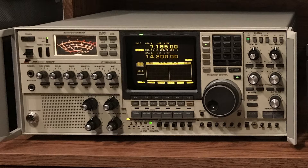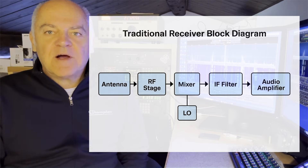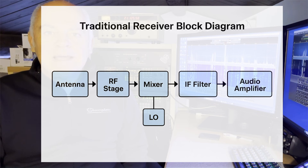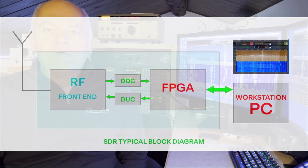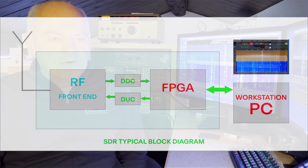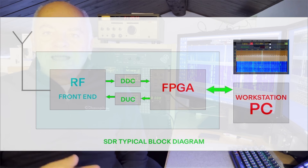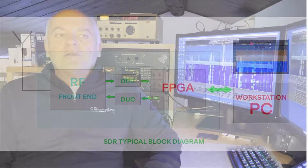A traditional radio is built from analog components, each of them performing a fixed function. In an SDR, most of these operations are done by software. The radio frequency signal is converted to digital almost immediately by an analog-to-digital converter, and all signal processing happens inside a computer — DSP and FPGA. This architecture offers enormous flexibility.